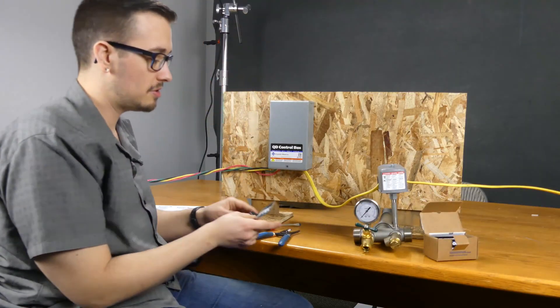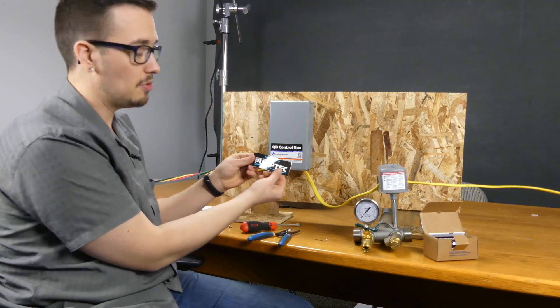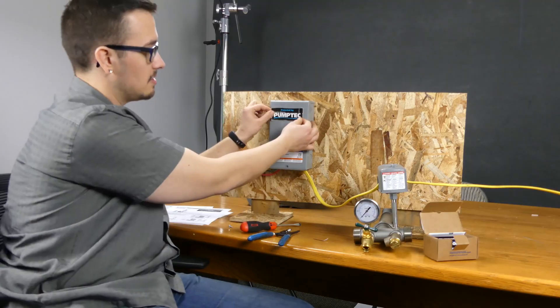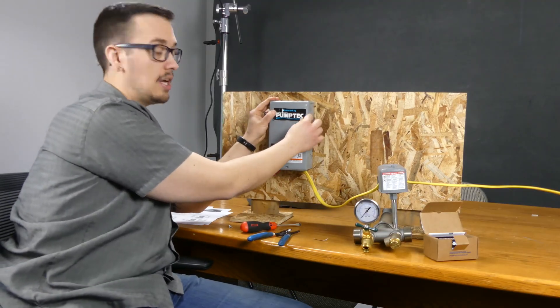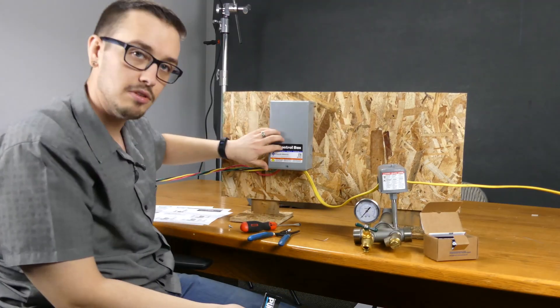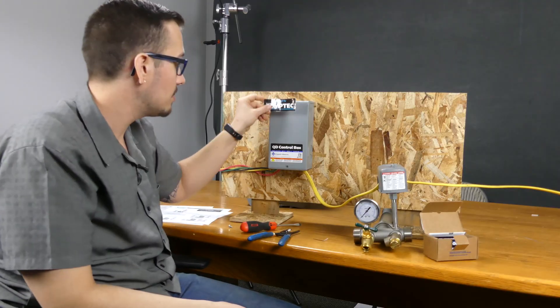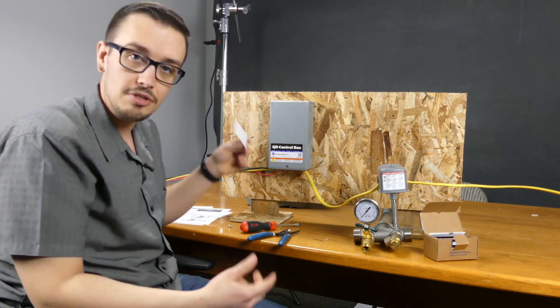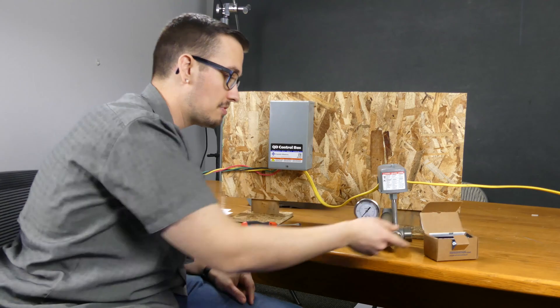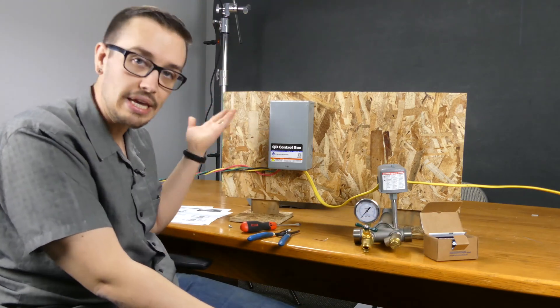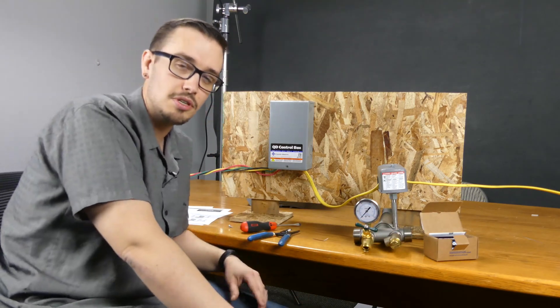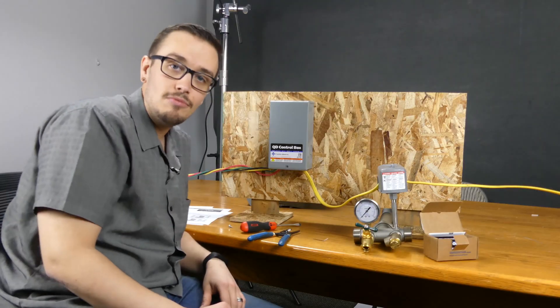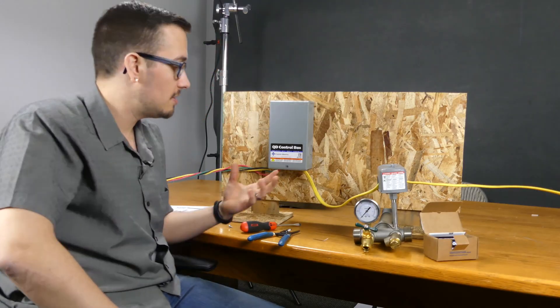These things are super easy to install. They do come with a little sticker. This is intended to go on your box here to tell your installer or anyone that services your system that you do have one of those. It's just kind of a nice little extra thing that you can do just to make it easier to identify the components of your system. So that's it with the installation on this.